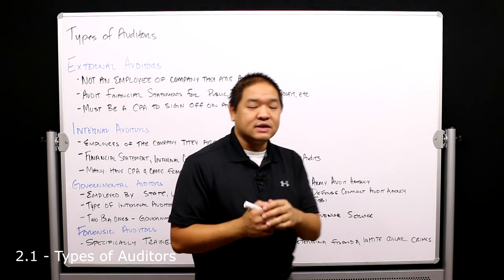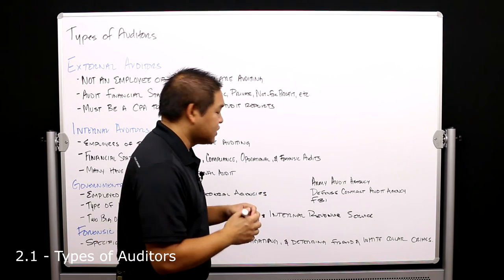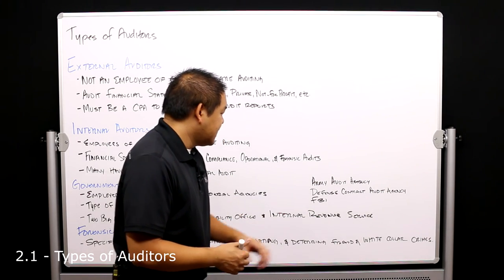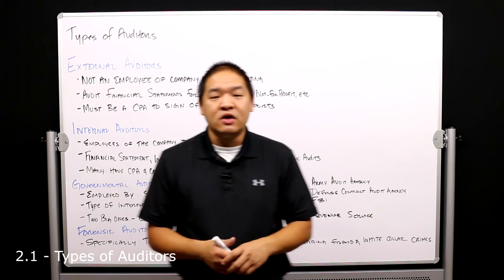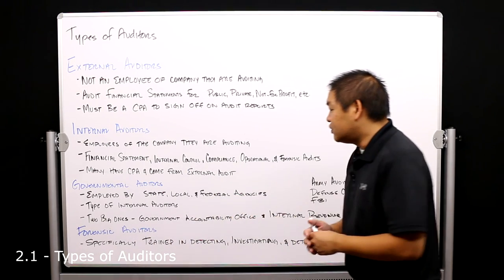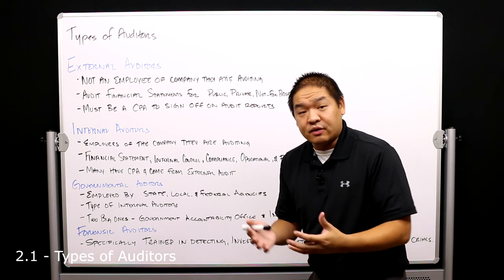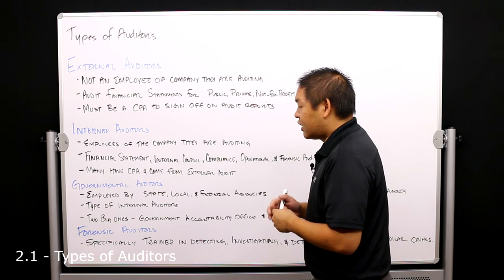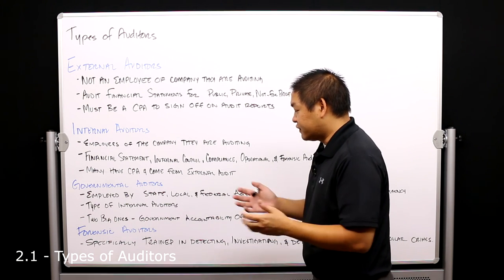In addition, we do have three other ones in the government agency that also provides audit work or some type of audit work, and that would be the Army Audit Agency, the Defense Contract Audit Agency, and then of course the SEC. So those are governmental auditors. They do mostly internal audit work but for the government or of the government itself, and so that's where governmental auditors are important to the fabric of auditing in the picture of internal auditing.